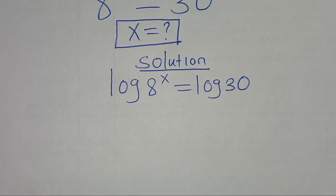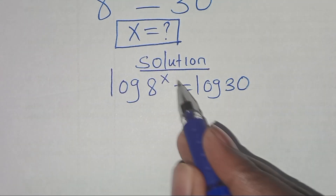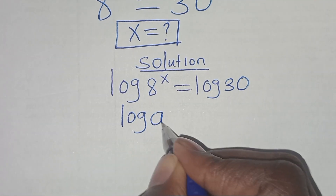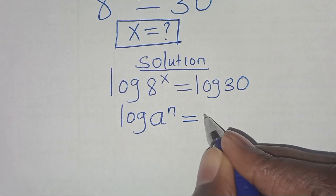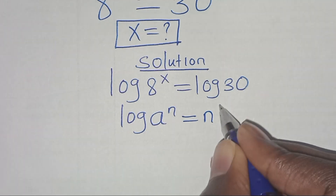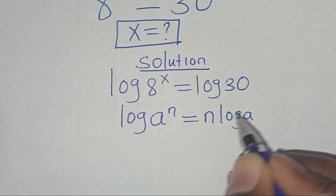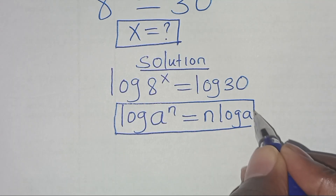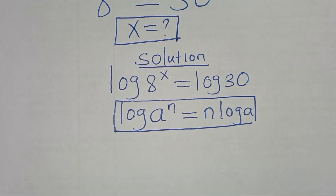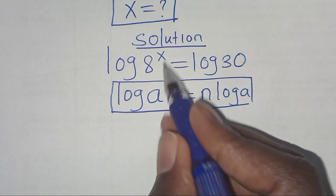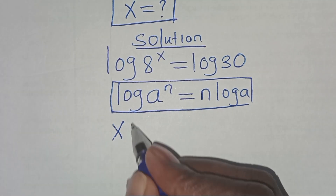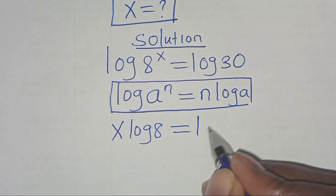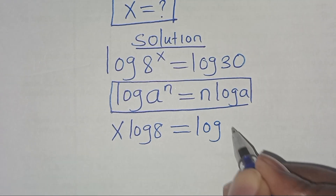Now, you find that log 8 to the power x is in the form of log a to the power n, which we can express as n times log a. Applying this power rule property of logarithm, then log 8 to the power x can be expressed as x times log 8, this is equal to log 30.